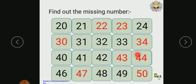Next, see the third row: 40, 41, 42. The next numbers are 43 and 44. See the fourth row. You have 46, then 47, 48, 49, and 50.